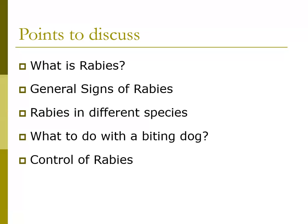Rabies in sheep, goats, and cattle is characterized by the animals becoming restless and excited; they may bite themselves and saliva drips from the mouth. The most important sign in cattle is that the animal bellows very frequently with a strange sound. The animals will become paralyzed and die.